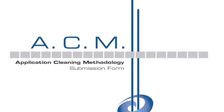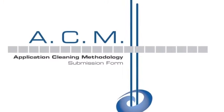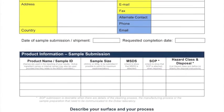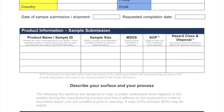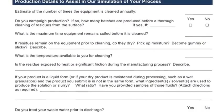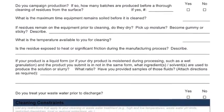The ACM form collects pertinent information about your soil and your process, including what types of surfaces you are trying to clean, how the soil is applied, whether there are any constraints with regard to process, safety, or effluent that pertain to your facility.